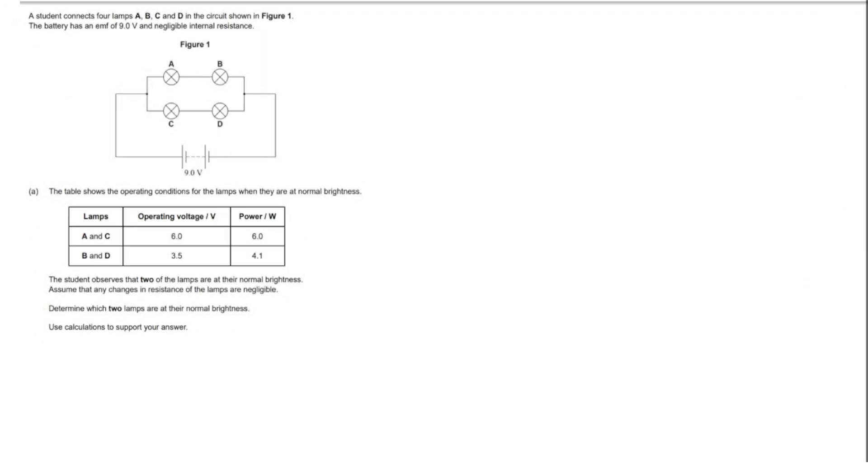We've been asked to calculate which of these four bulbs is operating at its normal brightness. Normal brightness would imply that the voltage across each bulb would be equal to its specified operating voltage, and to find these voltages we're going to need to know the resistances of the bulbs. So that's what this question really is all about.